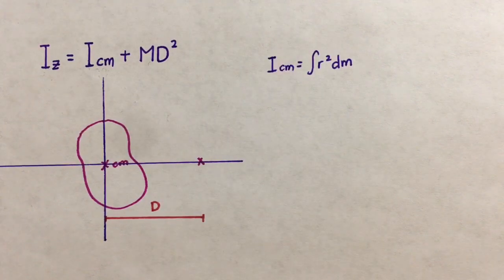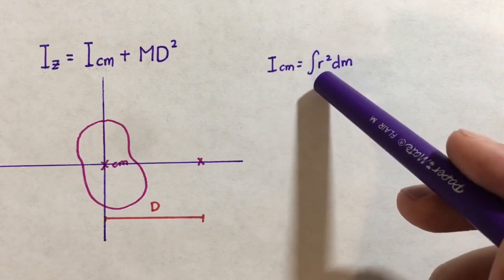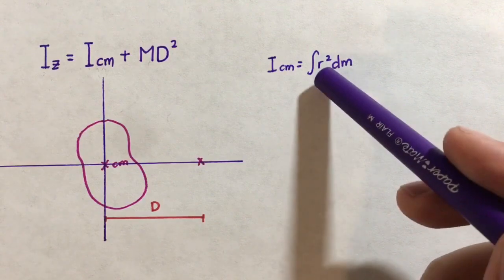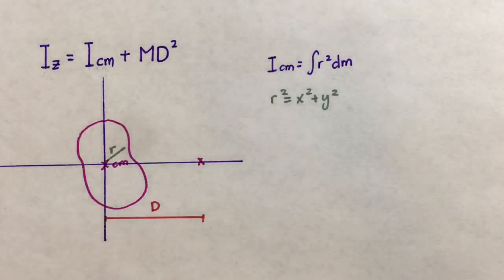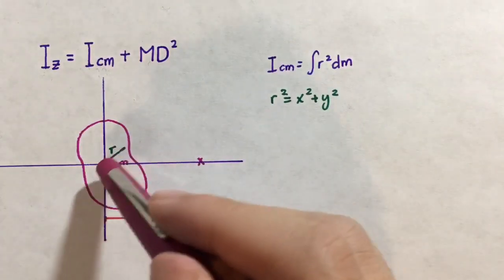We can start with the basic equation. ICM, the moment of inertia about the center of mass, is equal to the integral of the little bits of moment of inertia, which can be represented as R squared times DM. In this equation, R represents the distance between any point particle and the center of mass.